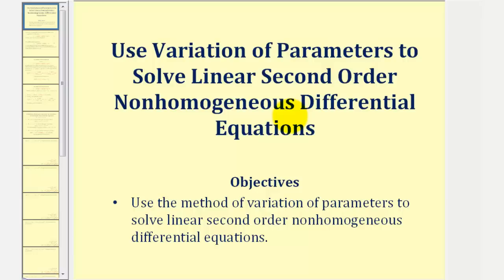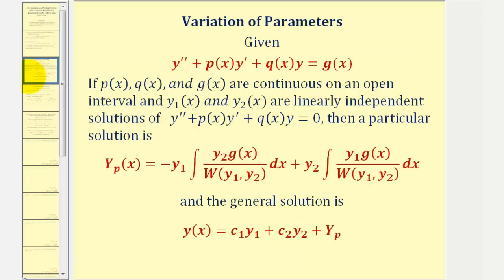Welcome to an example on how to use the variation of parameters method to solve a linear second order non-homogeneous differential equation. If we have a differential equation that fits this form here where g of x is non-zero, and p, q, and g are continuous on an open interval, and y sub one and y sub two are linearly independent solutions to the corresponding homogeneous differential equation, then a particular solution to the non-homogeneous differential equation is given by y sub p using this formula here.